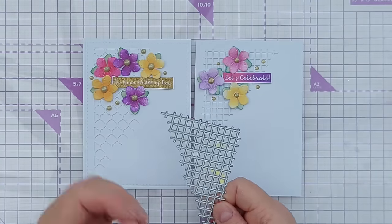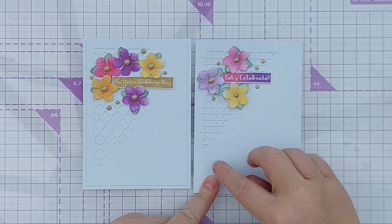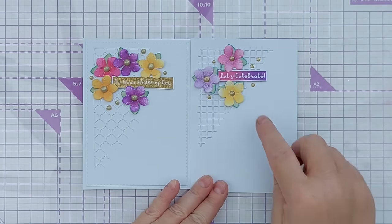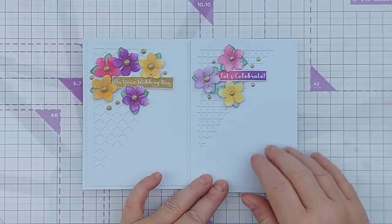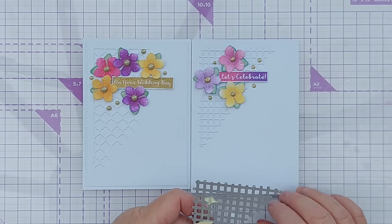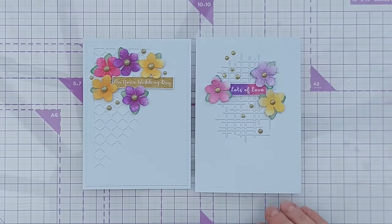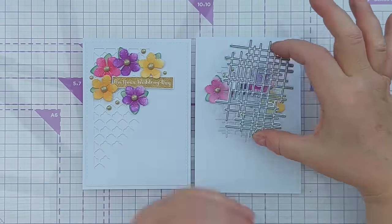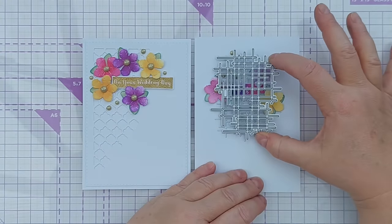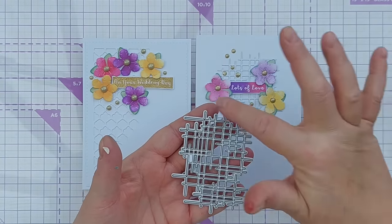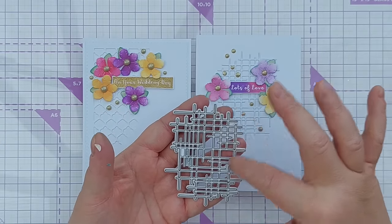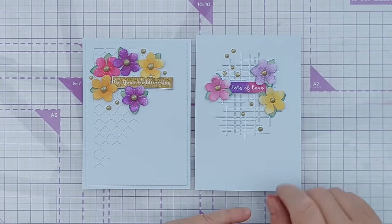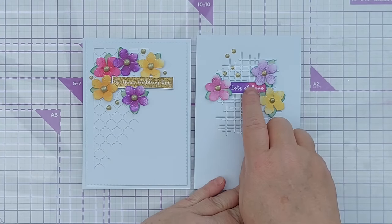For my fifth and final card, I used this net die to add my texture and I popped it in the middle. It just really lends itself to going in the middle I think, because it's almost oval really. It's some rectangles and squares, but the shape is almost oval and sits really nicely in the middle of a card. I popped a 'Lots of Love' ombre stamped sentiment in the middle and then added my flowers around it.